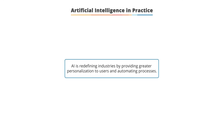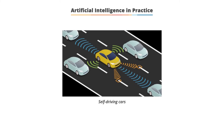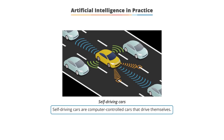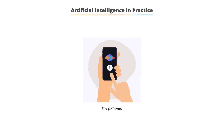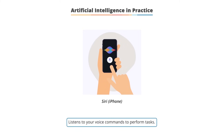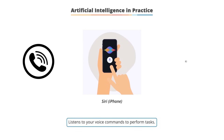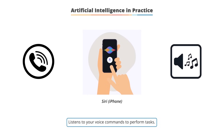Artificial intelligence is redefining industries by providing greater personalization to users and automating processes. One example is self-driving cars — computer-controlled cars that drive themselves, where human drivers are never required to take control. Apple's Siri is another example; it simplifies navigating your iPhone by listening to voice commands to perform tasks like calling a friend or playing music.